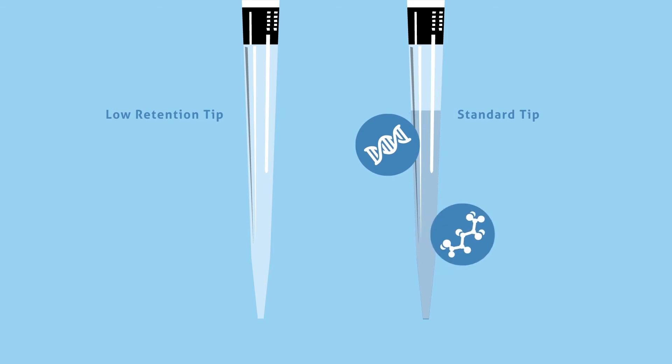For the best performance, look for tips with special low-retention qualities, such as specialty coatings or low-retention properties built into the resin of the tip. These tips will further protect your samples from possible coating contamination.